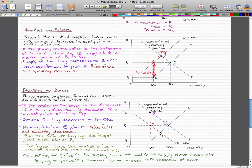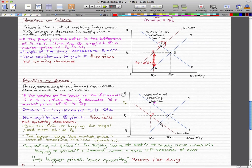Now, for penalties on buyers, again, prison terms and fines, those are the penalties. The demand would decrease if the demand curve shifts leftward from this blue demand curve to this red demand curve. Now, if the penalty on the buyer is the difference of A to J.